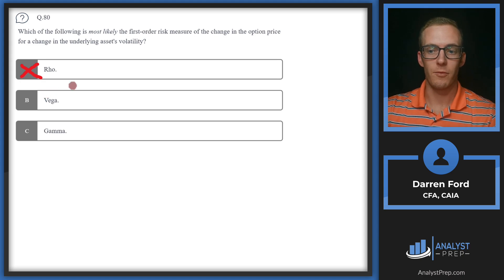B: Vega. Vega does measure the change in price for the change in volatility. This is pretty much the definition of vega, so we can circle B. But let's just make sure we can rule out C. C: Gamma measures a change in the delta for the change in the underlying. This is going to be a second-order risk measure and also not related to the asset's volatility like vega is. So we'll go with B.